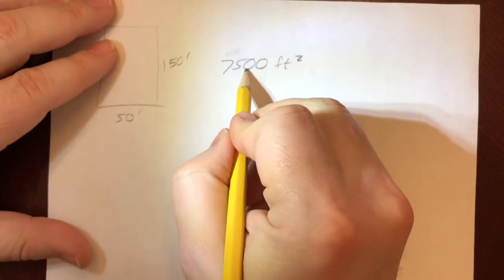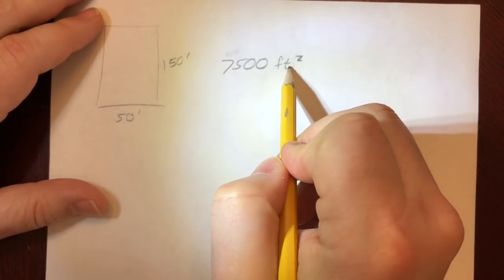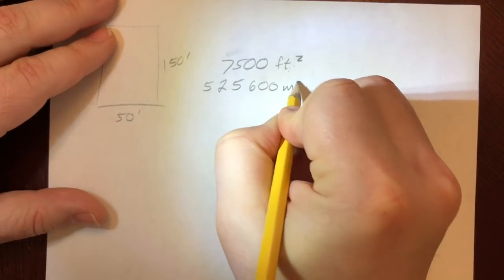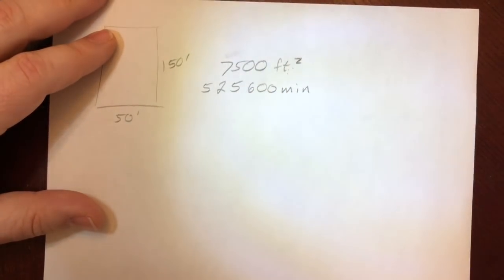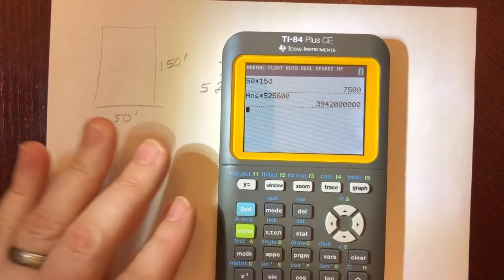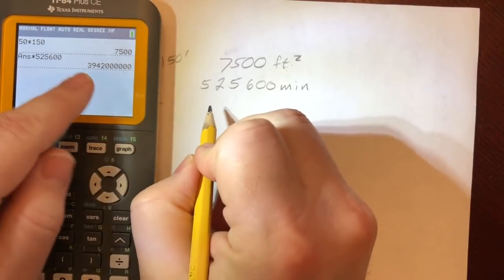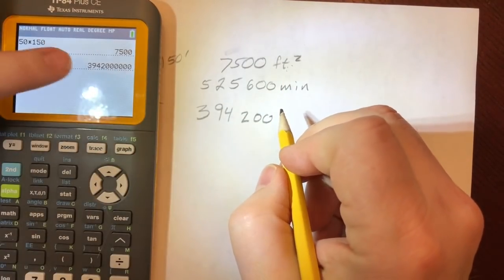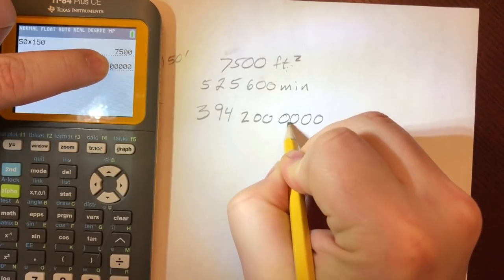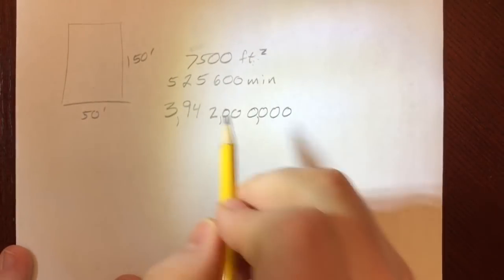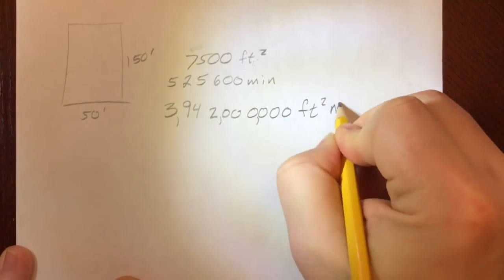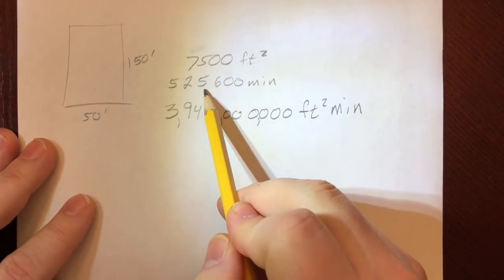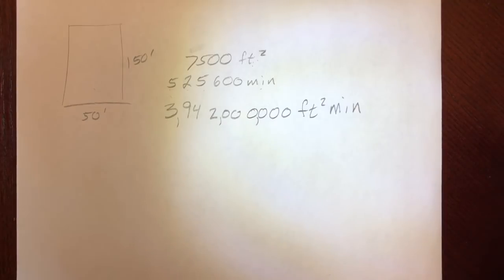Now bear with me here, this is going to get a little wonky. If we think about usage of his property, we also have to take time into consideration. So there are 525,600 minutes in a year, and yes I know that because of Rent. If I multiply those, his property has 3,942,000,000 square foot-minutes. Meaning every square foot of his property exists for 525,600 minutes through the year. Kind of a weird unit of measure, but here's what I'm going to use it for.